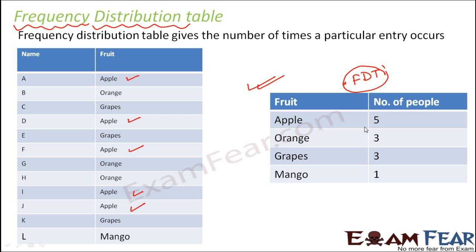So, what did you observe? What different did we do? We just created a new table, but this new table is more organized than the previous one. In the previous table, it was a haphazard table where the same fruit was getting repeated over and again, so we were not able to understand which was occurring more and which was occurring less. But now, when we make this frequency distribution table, we clearly see how many times a particular entry gets repeated. So this is the concept of organizing data — whenever we talk about organizing data, the first thing we do is make an FDT, that is a frequency distribution table.